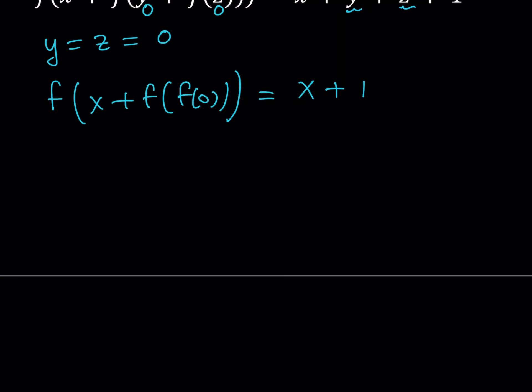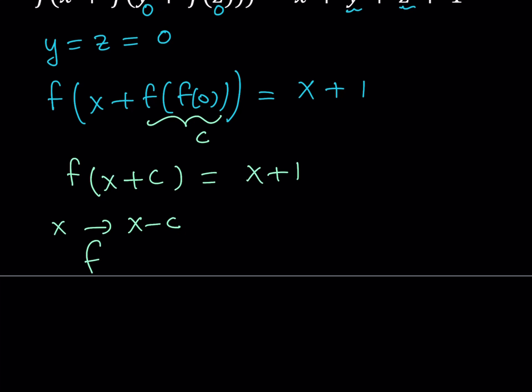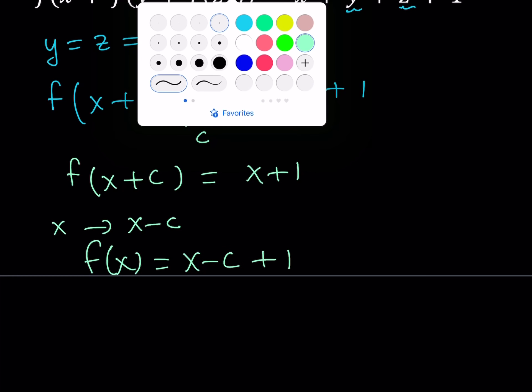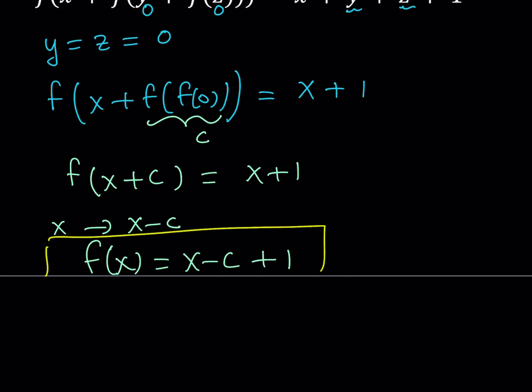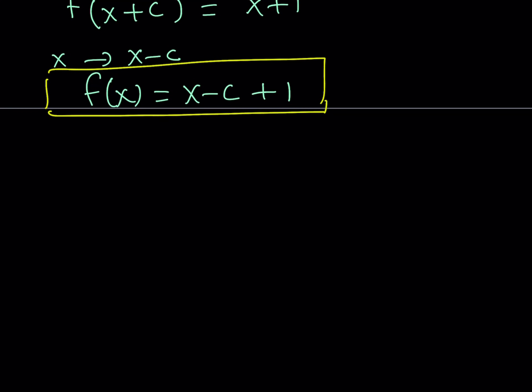Now f of f of 0 is a function evaluated at a point and then evaluated again — that's a constant, so we can call it c. We can write our equation as f of x plus c equals x plus 1, which tells us that f is a linear function. Replacing x with x minus c gives us f of x equals x minus c plus 1. This is a really useful formula and we're going to use it.